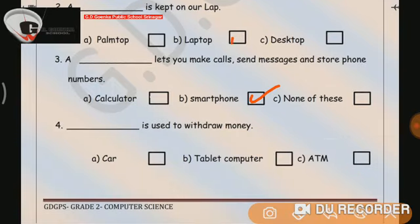Number 4 is, dash is used to withdraw money. A. Car. B. Tablet computer. C. ATM. Correct answer is, yes, ATM. ATM is used to withdraw money.